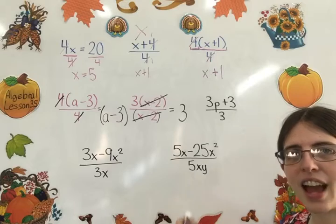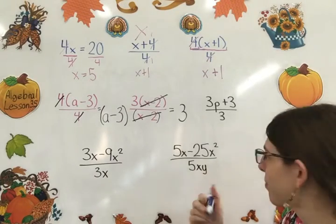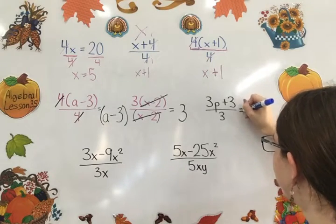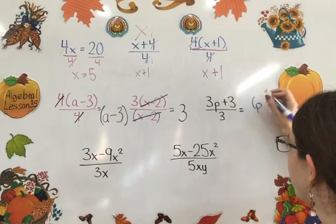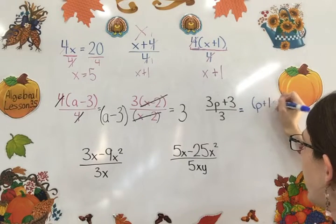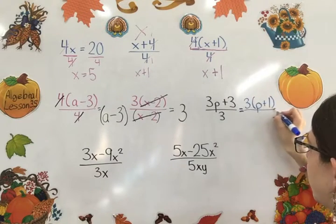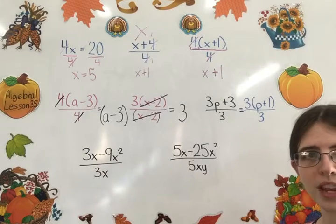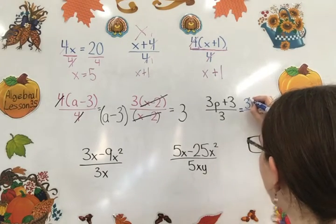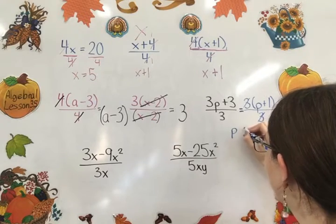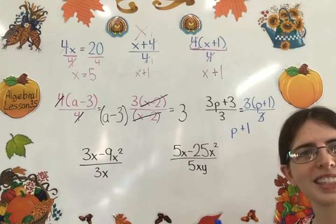What's the greatest common factor of 3p and 3? 3, right? I can divide both of those parts of my term by 3. So I get 3p divided by 3 is just p. 3 divided by 3 is 1. So I have 3 times p plus 1 over 3. Now I can reduce my 3 to 1. And so my final answer is p plus 1.